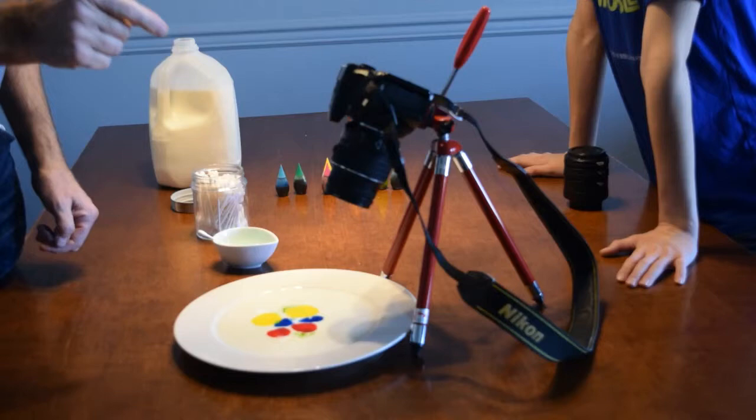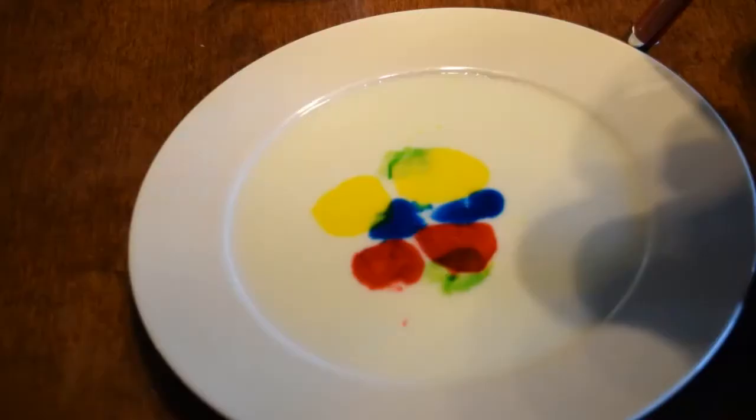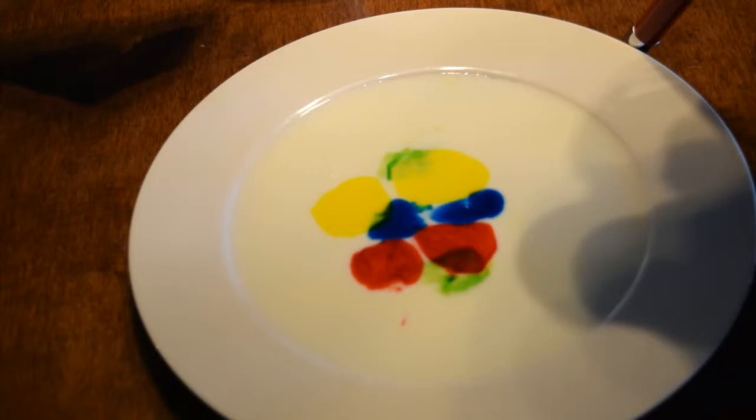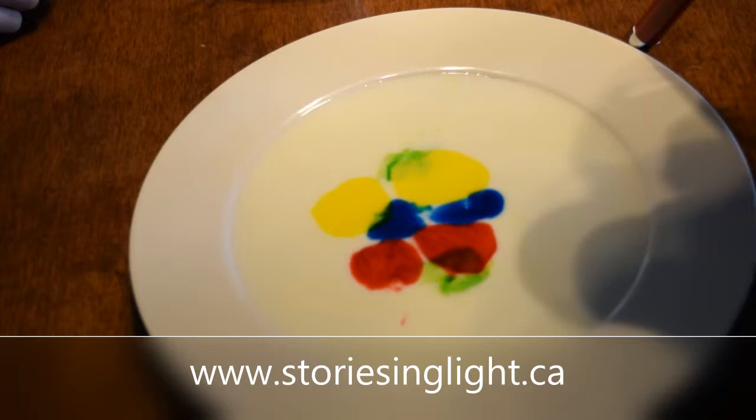So we're going to switch over now to a different camera. We're going to show you what happens and then we'll show you some of the pictures we captured. You can see the plate with the milk. We've got different sorts of food coloring. I've got my camera set up in burst mode because the reaction is pretty fast and cool. So I'm going to be taking six frames a second.